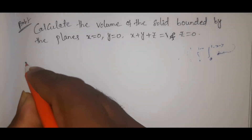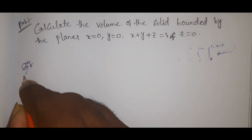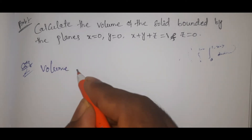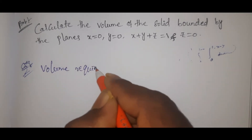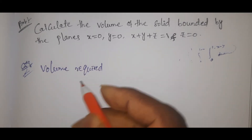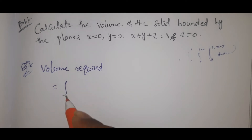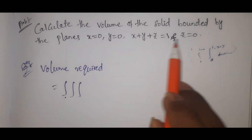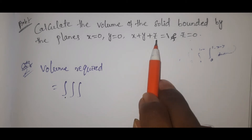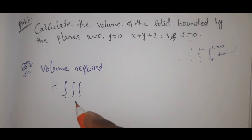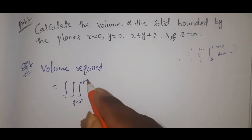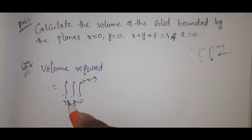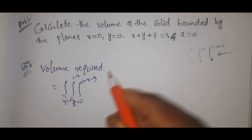Solution. The value required equals the triple integral with z equal to 0 to 1 minus x minus y, y equal to 0 to 1 minus x, and x equal to 0 to 1.